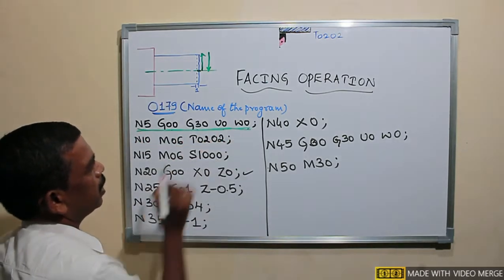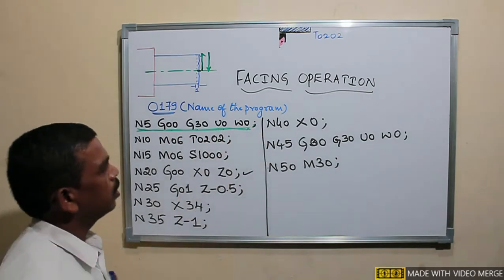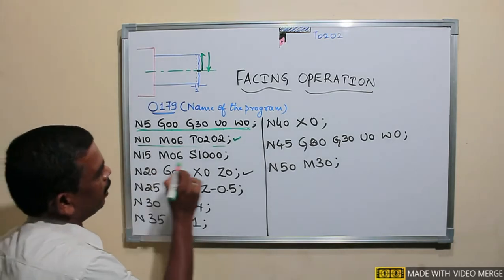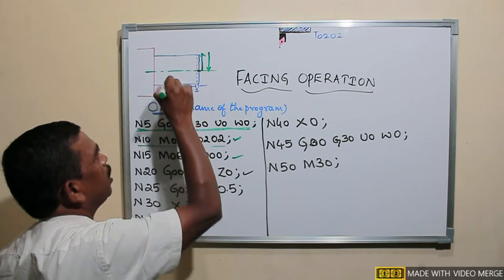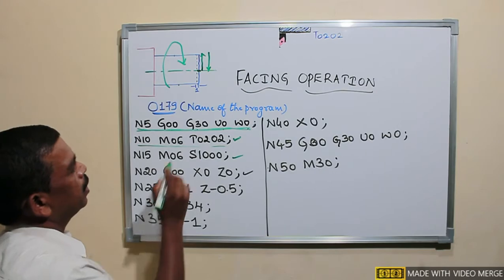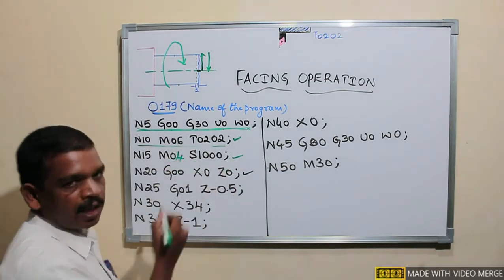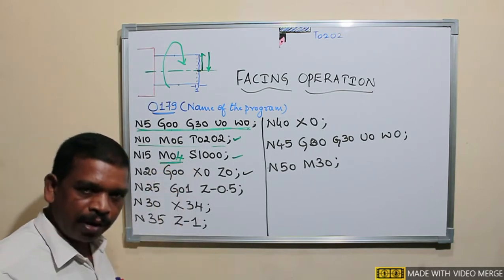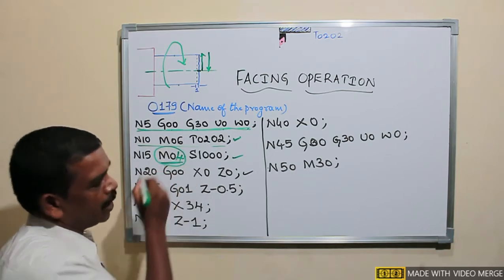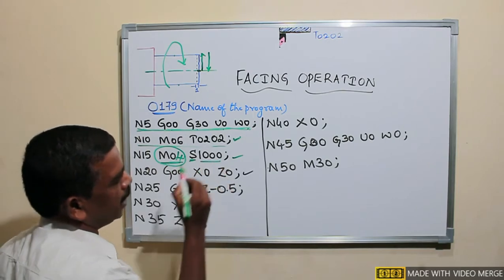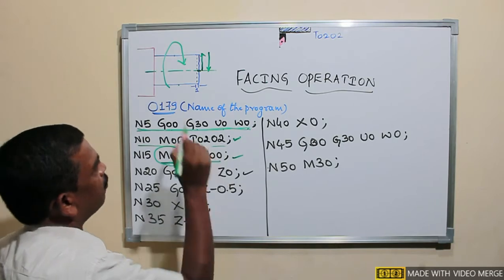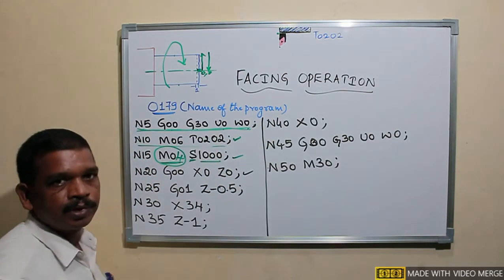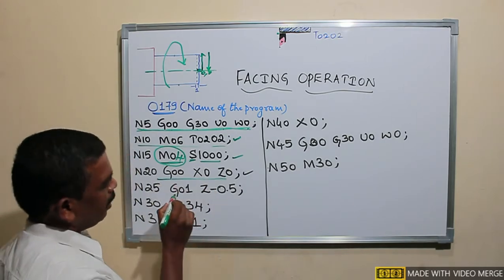These blocks each consist of a number of words. Here I will send the tool to its home position, then index or change to the required tool — tool number 2. Then I will rotate the work piece in the clockwise direction using M04 and set the spindle speed. For this FANUC turning center OiTF series, M04 rotates clockwise, or you can also use M03 followed by S and an RPM value.